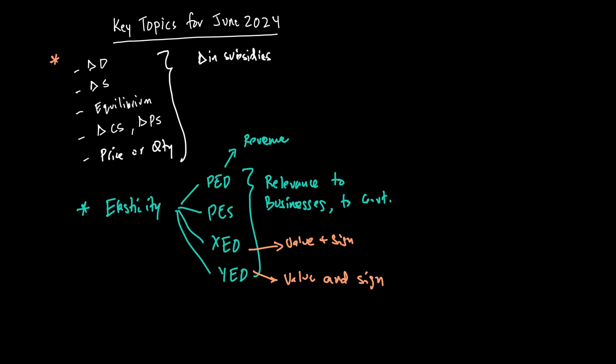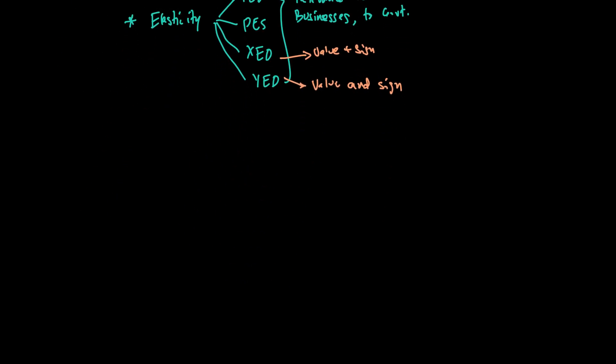Another question I feel strongly about could be on government intervention. It's a large topic because within government intervention you have indirect taxes, you have subsidies, you have the agricultural market, you also have minimum and maximum price, and you have a discussion about merit goods, demerit goods and public goods. Merit goods and demerit goods have been tested significantly; public goods also came in the last three papers. What has not come recently in government intervention is something on minimum price, so there's no harm in looking at minimum price and agriculture.